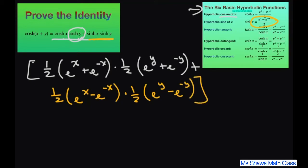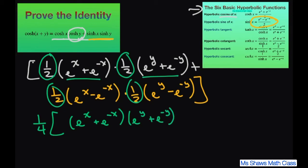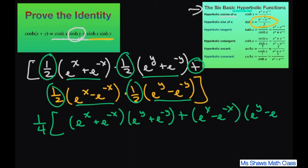Now we have one half times one half, which is one fourth for each group. I can factor out one fourth and then multiply the two binomials together. So that's e to the x plus e to the negative x, times e to the y plus e to the negative y, plus e to the x minus e to the negative x, times e to the y minus e to the negative y.